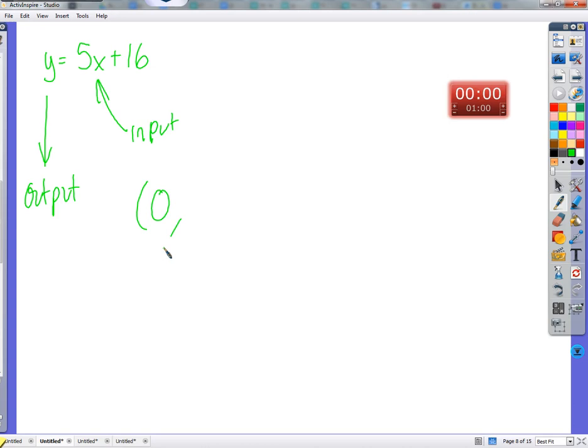And the output would be for zero, it would be what? Be 16. It was simple. You put in zero, function takes over, gives you 16, because it multiplies it by 5, and that's 16.